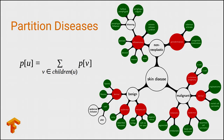If we're interested in a binary task of distinguishing malignant melanoma from its benign look-alike — melanocytic benign lesions — we renormalize the probability to sum to one. This is consistent with Bayes' rule, conditioned on the information that the disease is one of two things and not one of all nine red nodes.